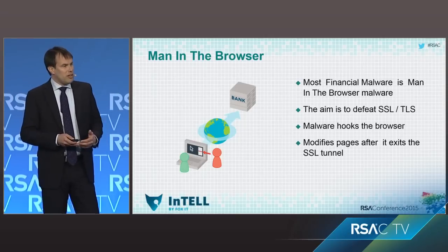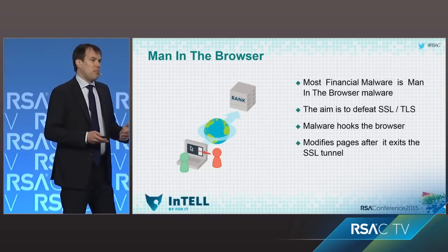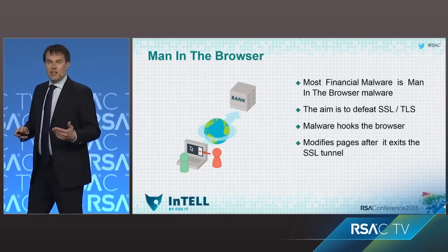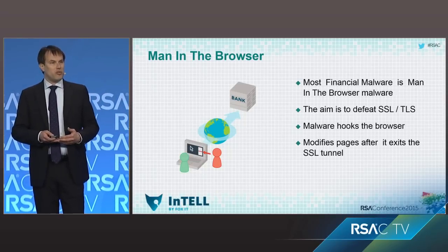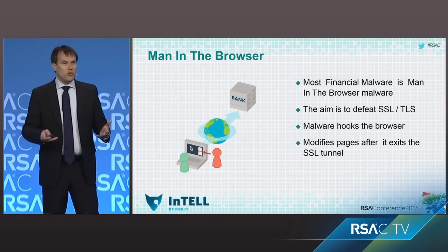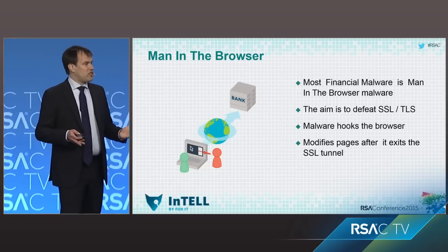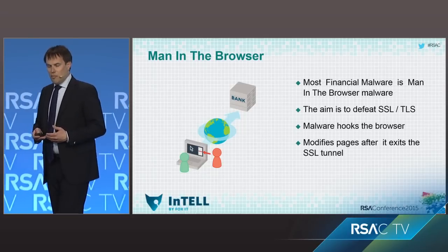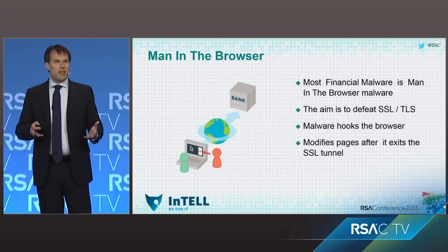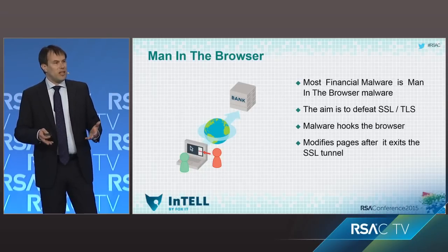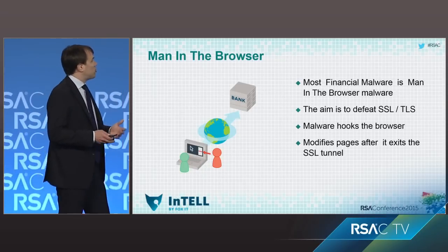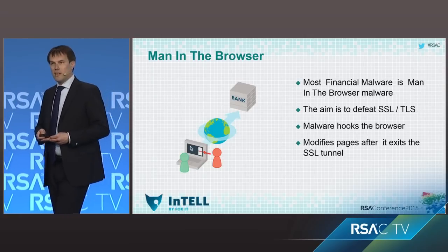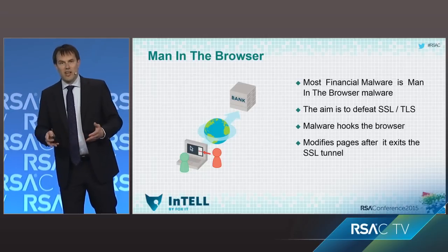Financial malware or banking Trojans are malware families used by attackers to manipulate online banking sessions, be it commercial or retail. Most financial malware is a man-in-the-browser variant — it will hook the browser to allow the attacker to manipulate traffic sent between the financial organization and the victim, bypassing SSL protection. Most financial malware also forms botnets, reporting back to a central command and control server, allowing the attackers to direct the attack.